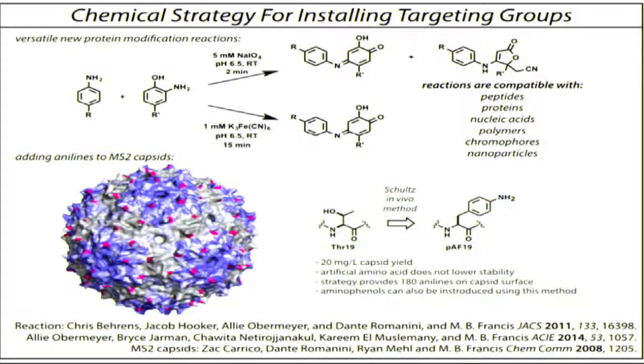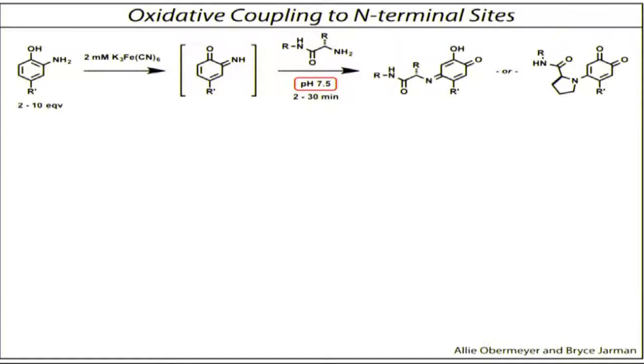remember this is anilines adding to these aminophenols. What we found is if we change our reaction condition, specifically we raise the pH of these reactions, now we have our same aminophenol, but now this will react with the N-terminal position of proteins and only the N-terminal position of proteins.